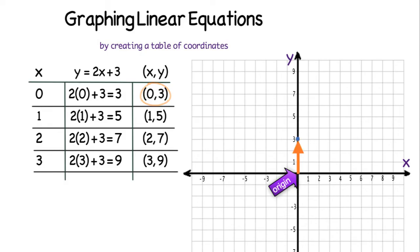The next coordinate, I start at the origin again. I go over 1 on the x-axis and up to 5 on the y-axis, so 1, 5 is graphed. For 2, 7, I always start at the origin, go over 2 on the x-axis and up 7 on the y-axis. And 3, 9, I start at the origin, go over 3 on the x-axis and up 9 on the y-axis.